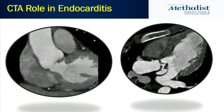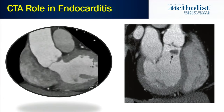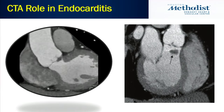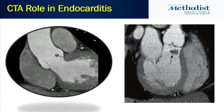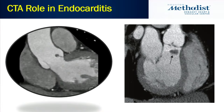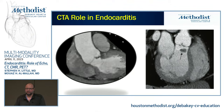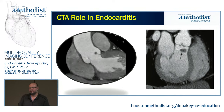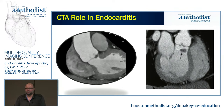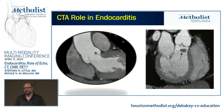We use retrospective gating for these valve cases. Our temporal resolution on our scanner is about 60 to 65 milliseconds, so a highly mobile lesion we might detect. However, if you're scanning on a system with worse temporal resolution — some systems in clinical use have about 200 to 300 milliseconds — you may not be able to see a small, highly mobile vegetation because it's moving too fast during acquisition.